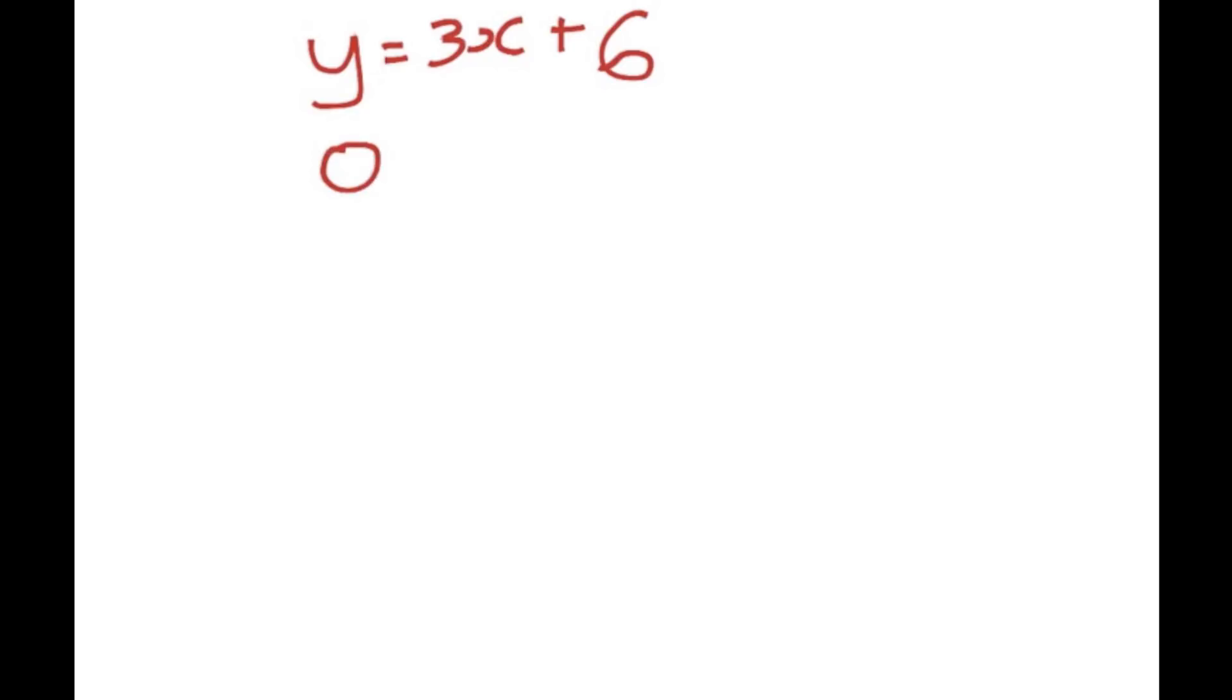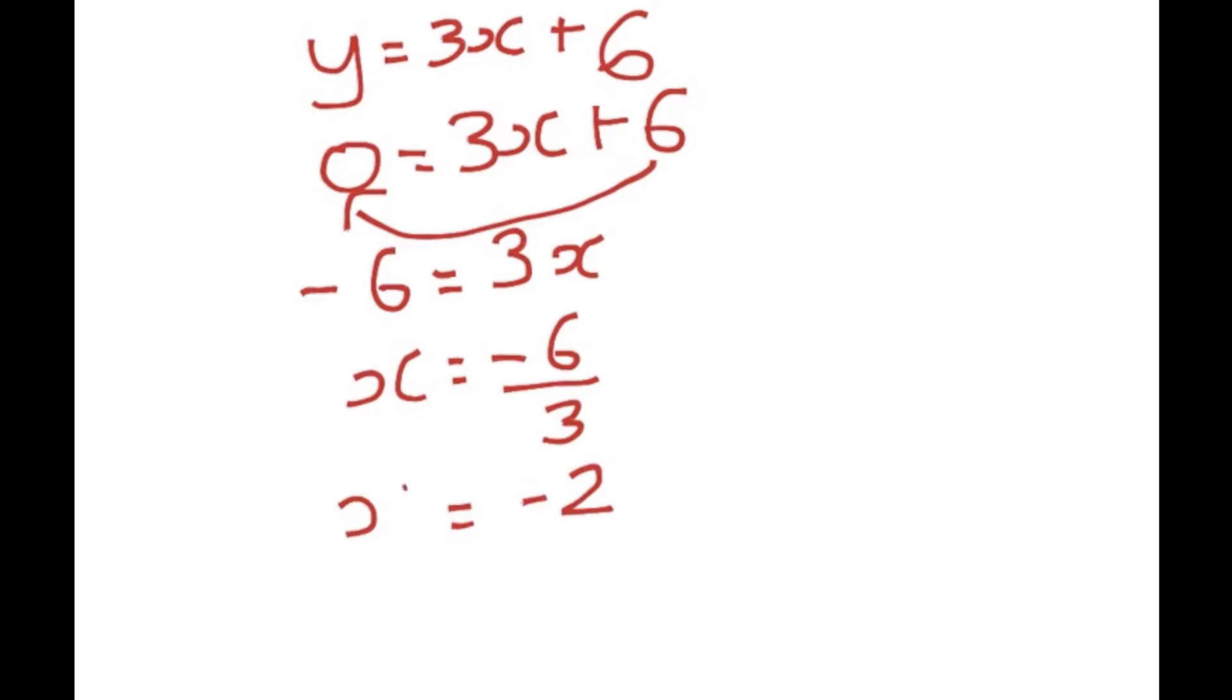Because we know it's represented by point 0, therefore I will just put in 0 there and rewrite the equation and solve it to find what x is. We know whenever we move something to the other side of the equal sign, the sign in front changes to the opposite. So we have minus 6 equals 3x, and therefore x is just minus 6 divided by 3, and the answer would give us x equals minus 2.